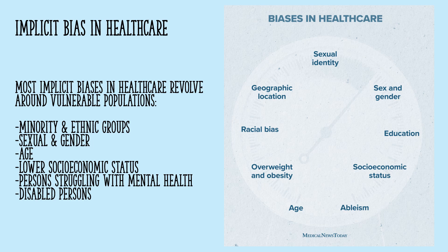Let's take a peek at implicit bias in health care. There are many different types of biases. Most biases in health care revolve around our vulnerable populations: our minority and ethnic groups, sexual or gender bias, ageism, lower socioeconomic status, persons struggling with mental health, disabled persons, maybe patients that are overweight or obese. Many different types of biases — most of them are negative, but they can also be positive. An example of a positive bias would be education. It could be negative, too, but when I think about education, sometimes I think about that being a positive.